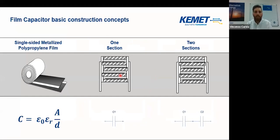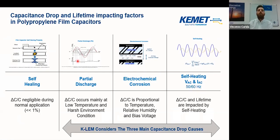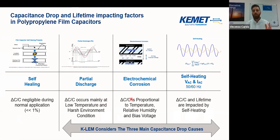Now we introduce the main film capacitor technology. The film capacitor technology is really fascinating from a process point of view, with two metalized dielectric films. The main configurations are the parallel or one-section configuration, and the two-series or two-section configuration. Obviously the lifetime and performances of the film capacitor are strictly correlated to the product type technology. The main capacitance drops in film capacitor technology are self-healing, partial discharge, electrochemical corrosion, and self-heating produced by voltage/current at 50–60 Hz.